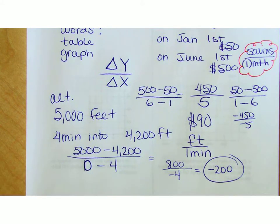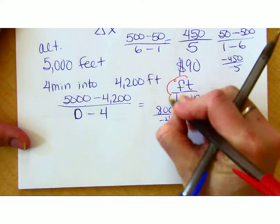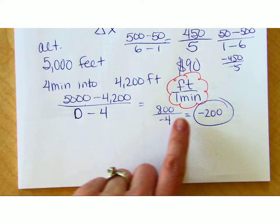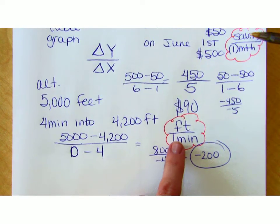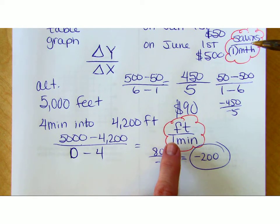This thing right here, I want you to put, like, a different color around there, because this right here is going to help you figure out what to divide by what. So rate of change from words. Are you guys good with that?